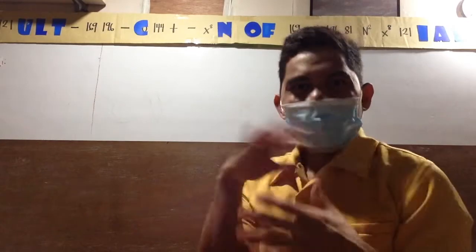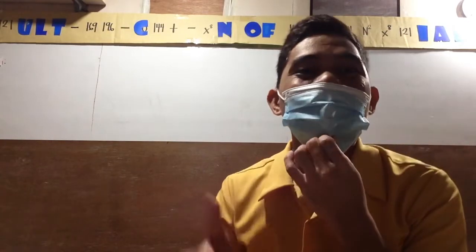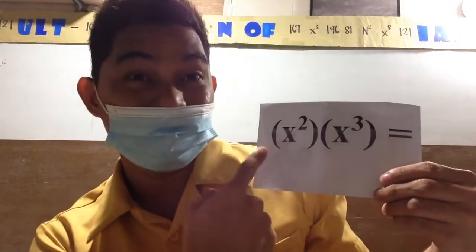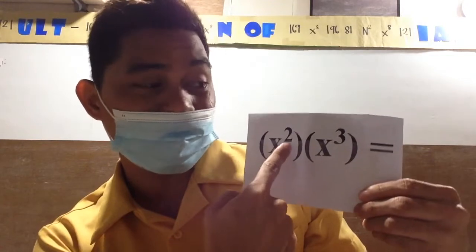Very good, you may now take your seat. Yesterday we talked all about exponents. Can you define what exponent is? Very good - how many times the base is a factor. So again, x squared - x is the base and the small number in the upper right, which is 2, is the exponent.